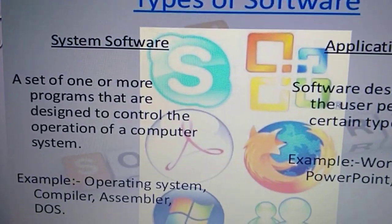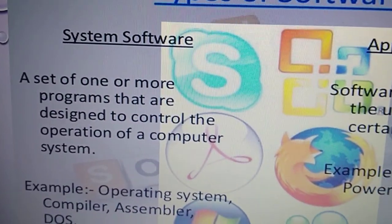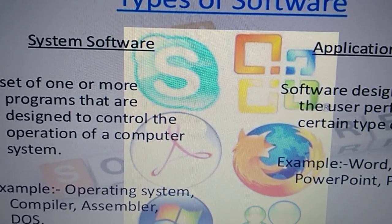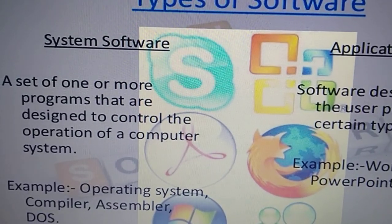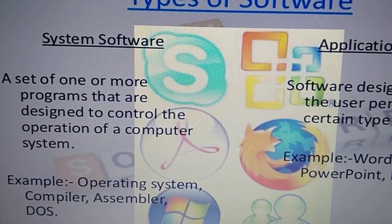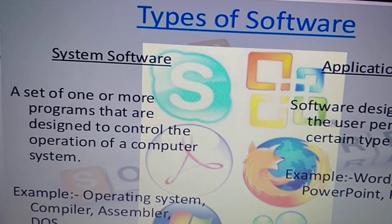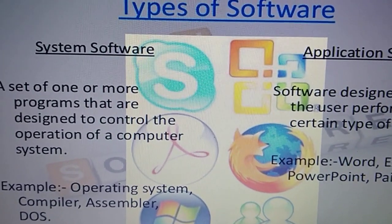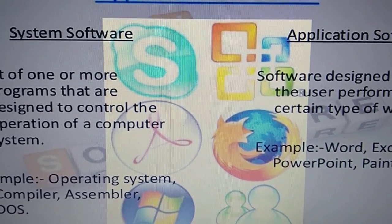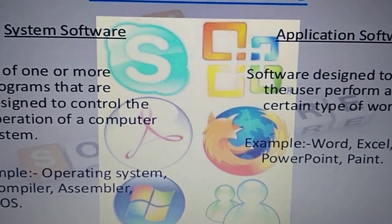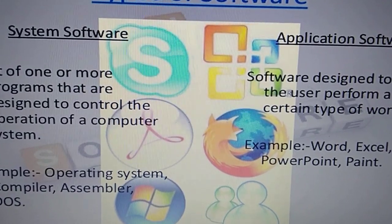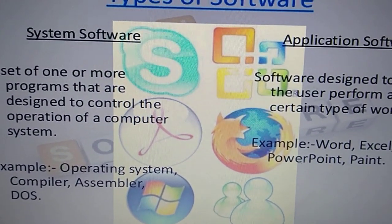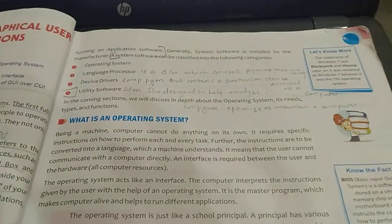Moving to system software. A set of programs that controls the overall operation of a computer system is known as system software. It is a collection of programs that controls and manages the overall operation and performance of the computer system. It acts as an interface — a medium to communicate — between the user and the computer. We cannot directly talk to a system, so it acts as a medium to communicate between the user and the computer. It also provides a platform for running application software.